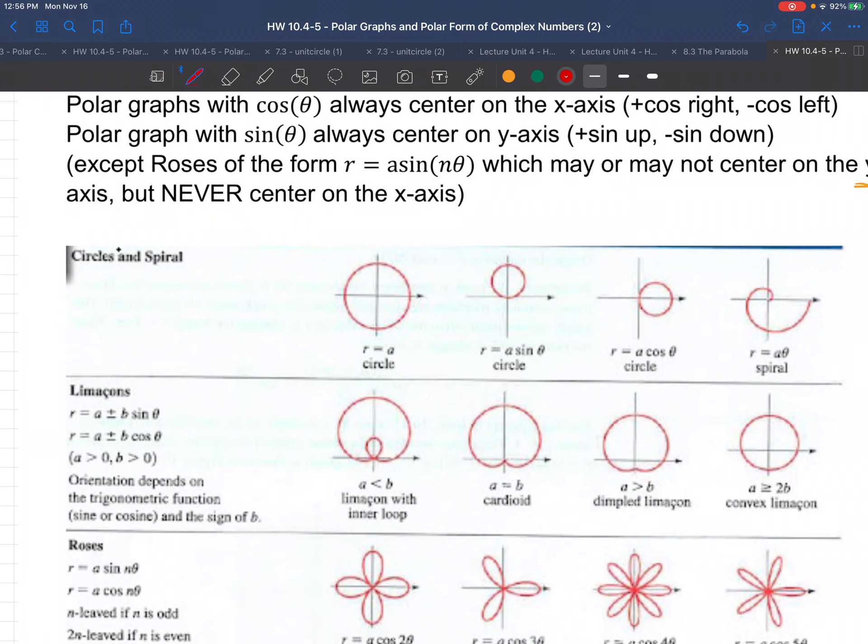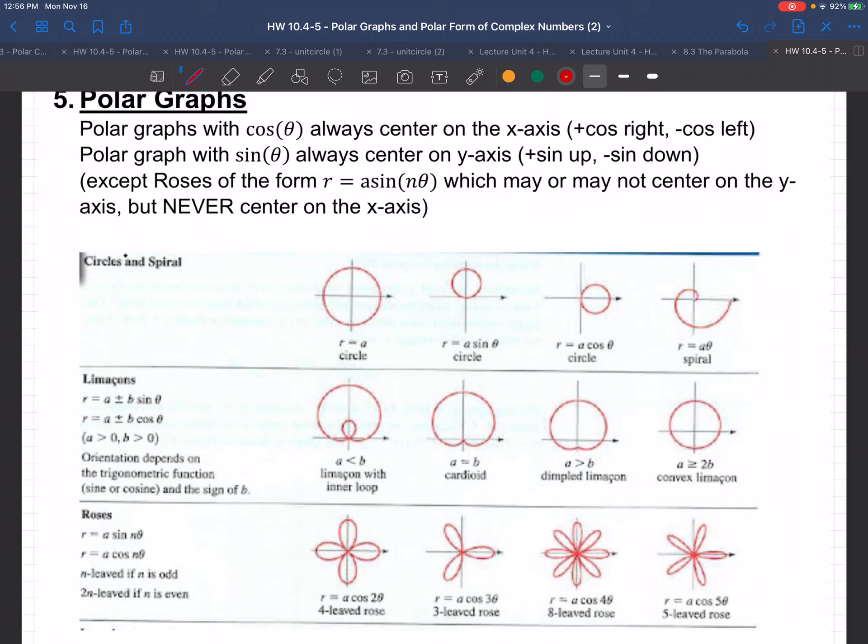Let me show you real clearly here. It says that cosine is always centered on the x, sine on the y, except roses of the form which may or may not center on the y, but never center on the x. So basically, the deal is cosine centers on the x, sine centers on the y.